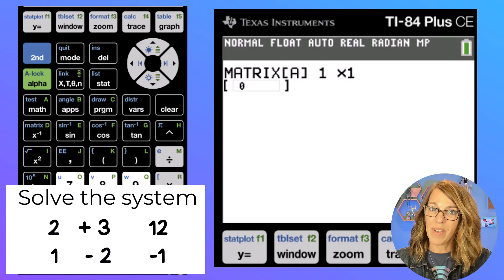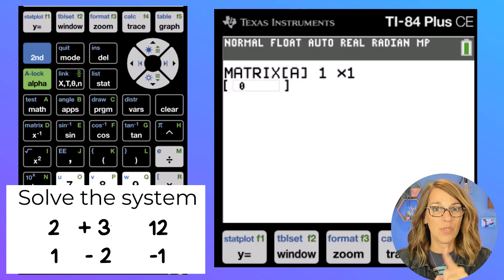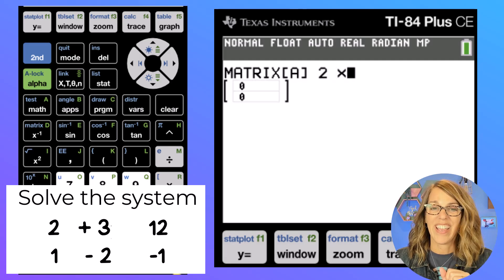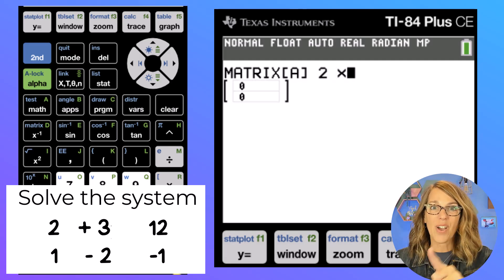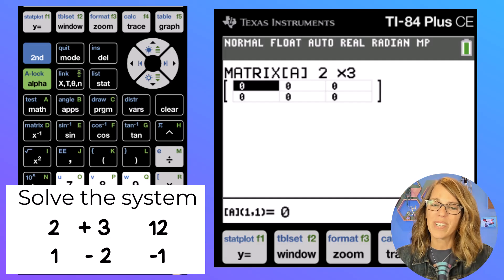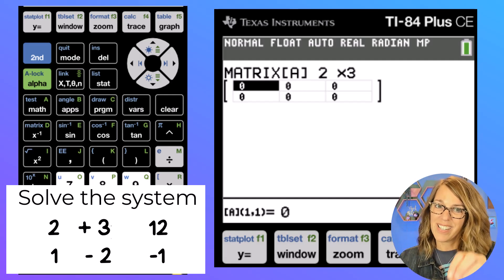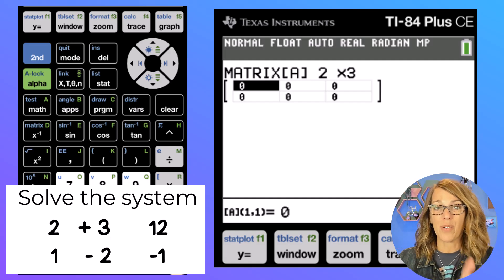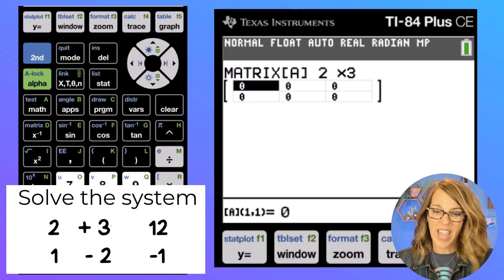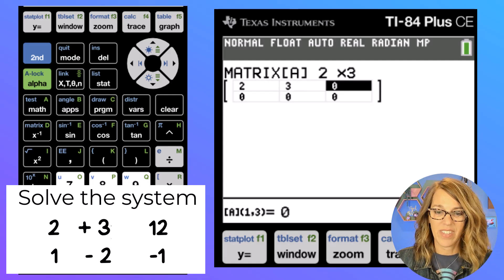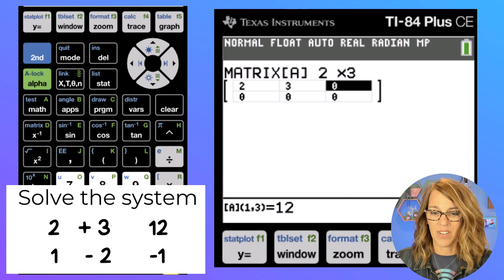Now my system of equations has two equations. So I'm going to put a two first, enter, and it has three coefficients or three terms, right? The x, the y, and the constant. So I want a three next. Really, you want to make sure that you have enough spaces for all of your coefficients. Let's put in the coefficients for our first equation. We had a two. So two, enter, and then we had a three, enter, and then a 12, enter. And then it moves right down to the next row.